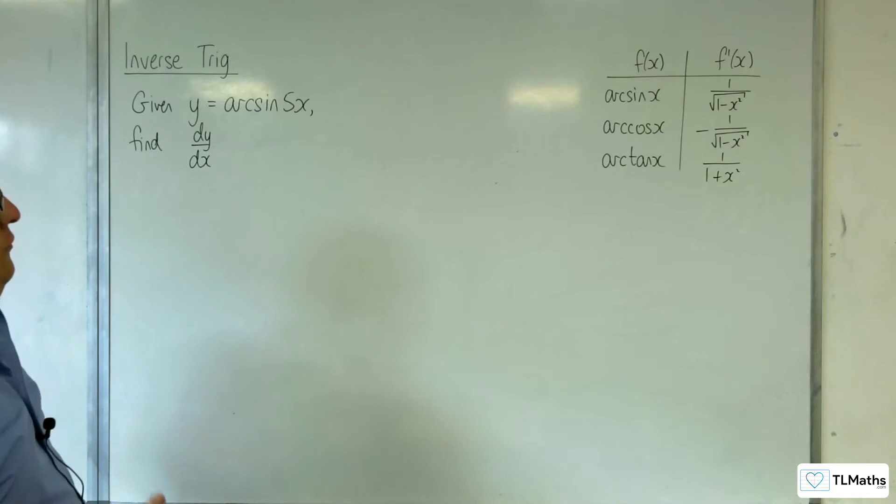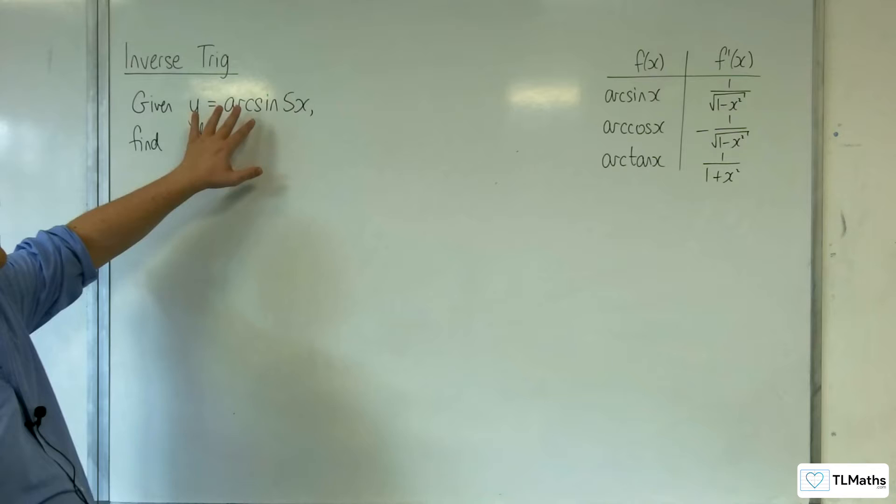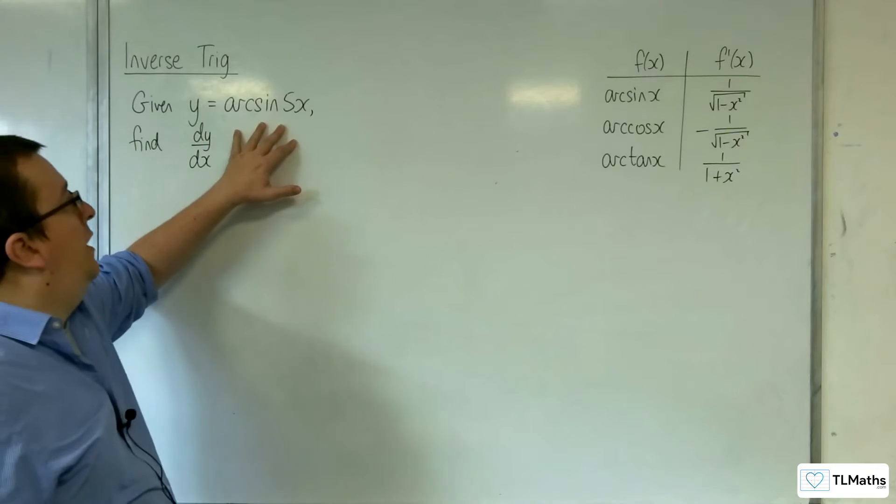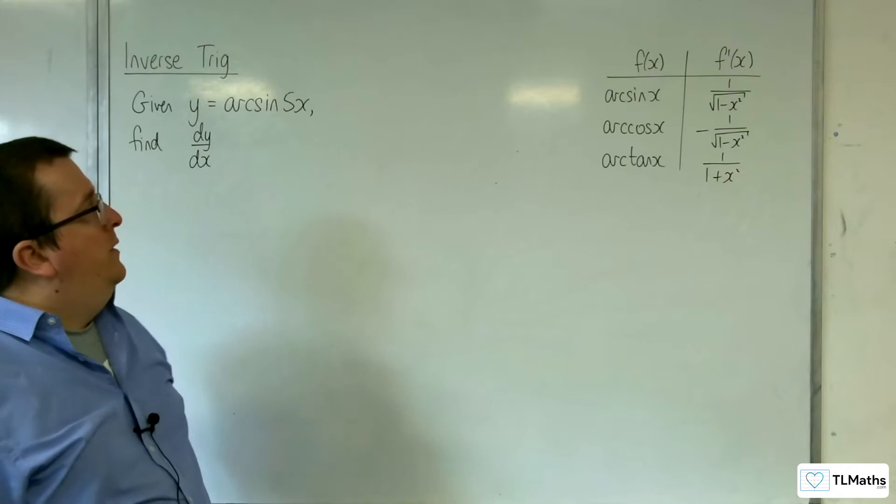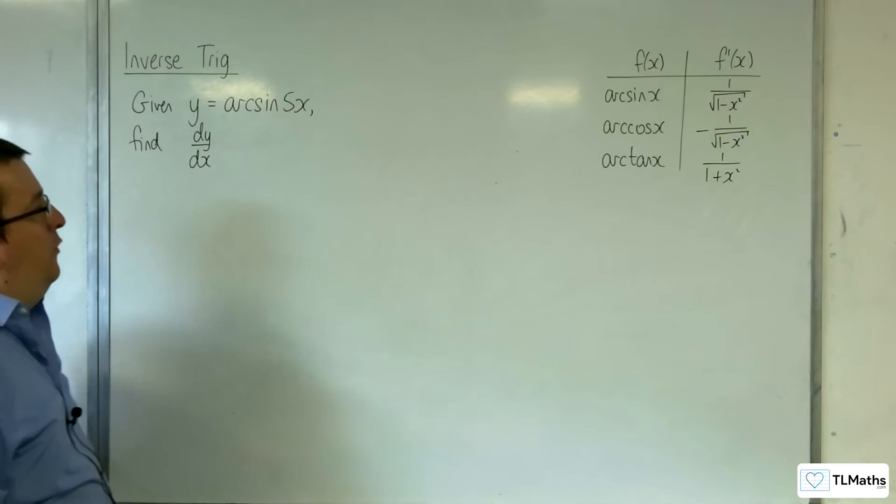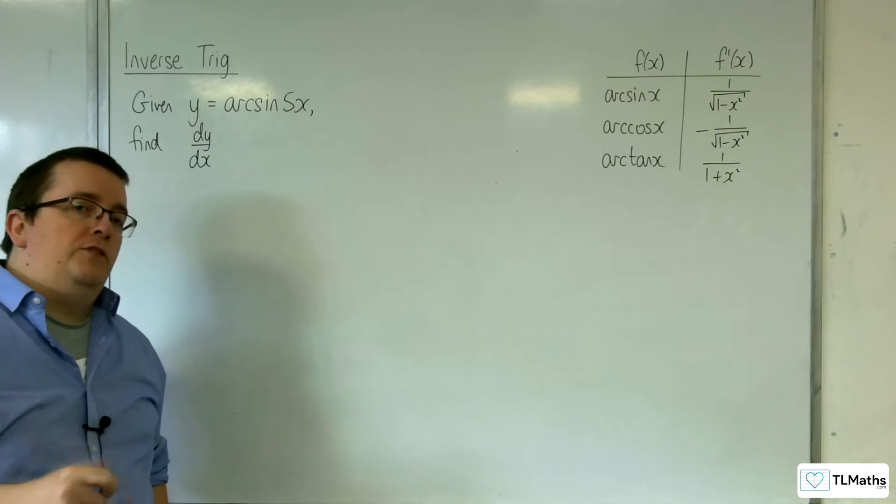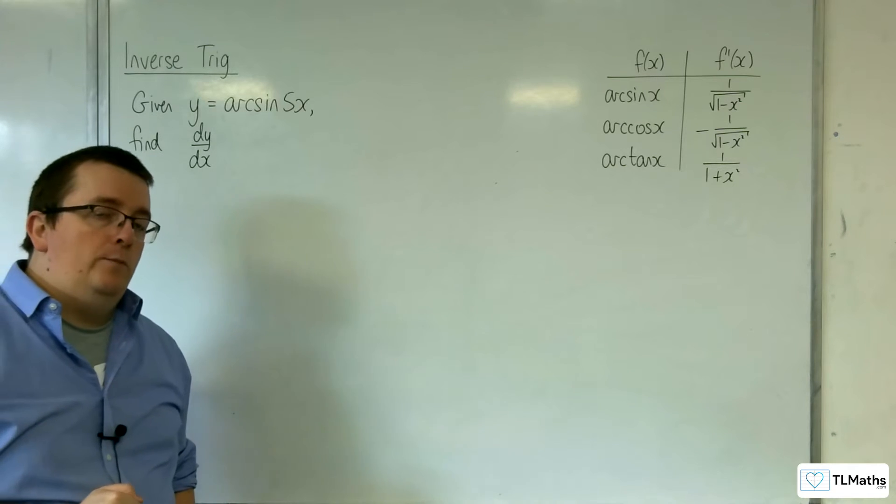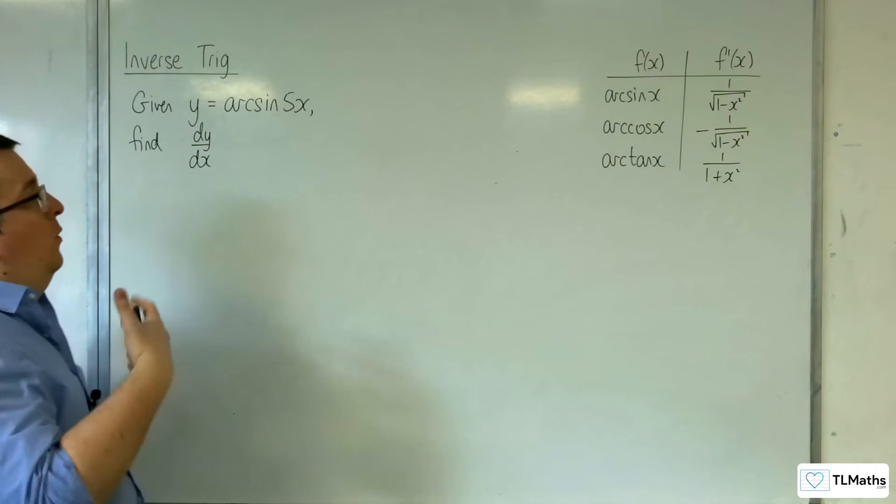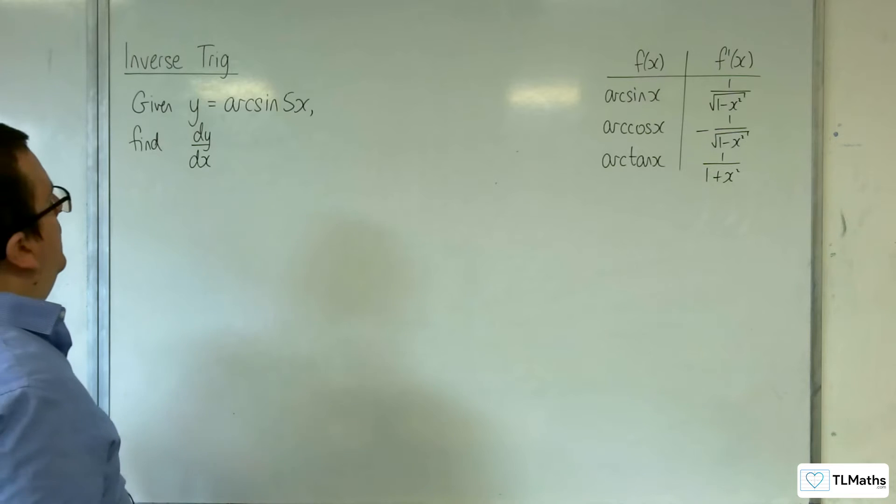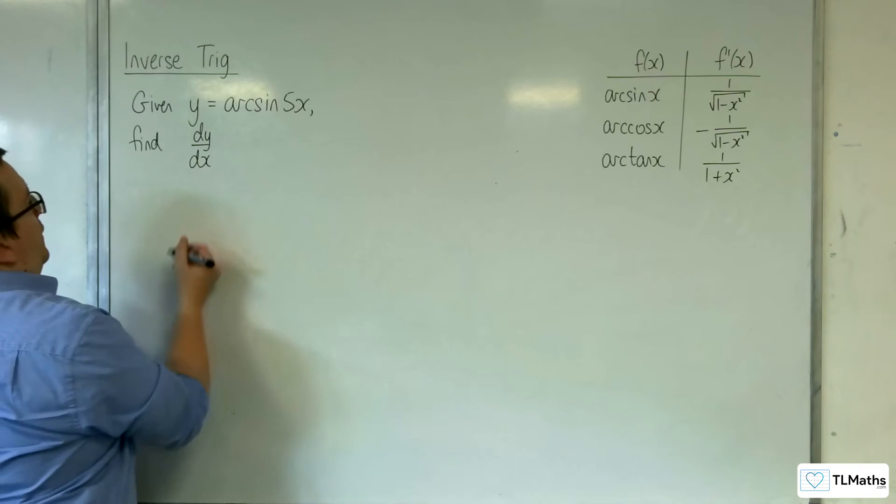So if, for example, I'm faced with differentiating y equals arc sine of 5x, then there are two trains of thought. Either I can use the long-winded way that I've used in the previous video, which I'll show first, or I could use the chain rule. So the first way,